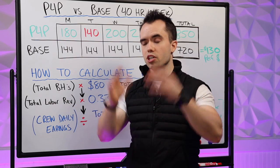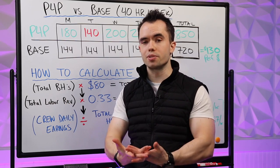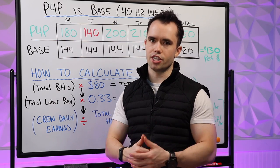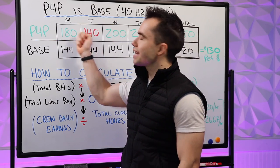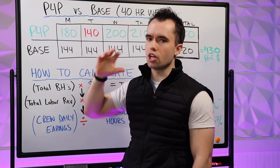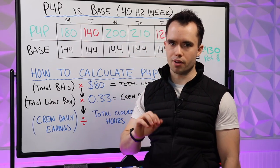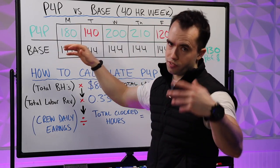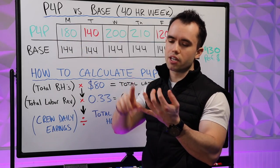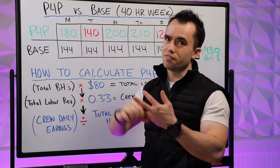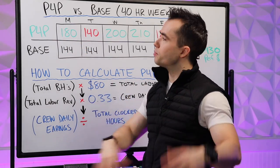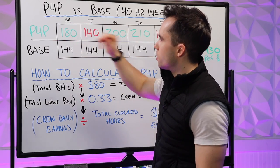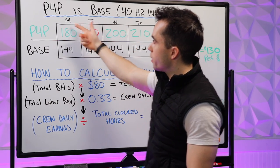If someone earns $100 in labor revenue and I'm giving them 33% of labor revenue, they'd get $33 on their paycheck. Now remember this is labor revenue, not gross revenue. Gross revenue includes things like material markup, estimate fees, dump fees — other things you might tack on. The actual labor revenue is what they get a percentage of on P4P. You can look at this and calculate: on Monday, if I take 180 and multiply by three because I'm giving them 33%, I could calculate exactly what was earned in labor revenue for the business.